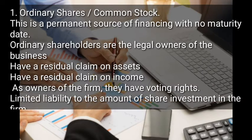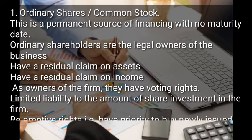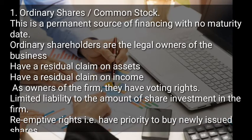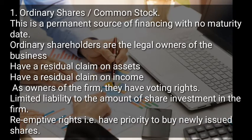Ordinary shareholders are the legal owners of the business. They have residual claim on the assets and residual claim on income. They are the owners of the firm, so they have voting rights and limited liability — limited liability in case a company is registered as a limited liability company, to the amount of share investment in the firm. They also have pre-emptive rights, meaning they have priority to buy newly issued shares.